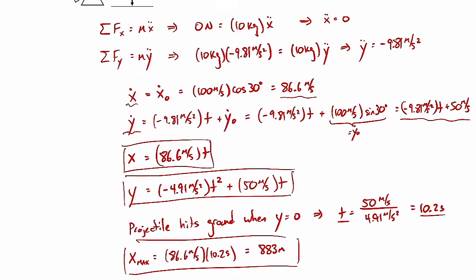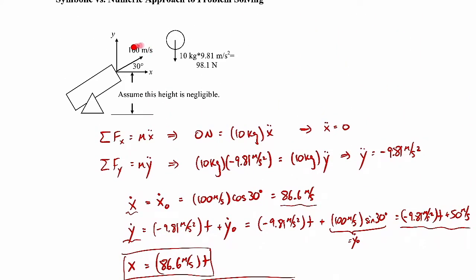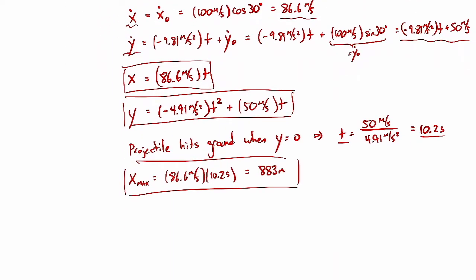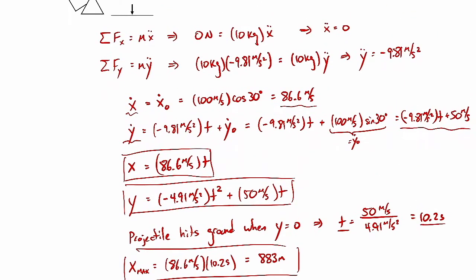If we doubled the initial speed from 100 to 200 m/s, how does that affect our range? It's just not obvious from the final formula — we just have numbers. We don't know exactly how these numbers depend on the initial speed. We'd have to dig back through the formulas to find which numbers correspond to the initial speed.